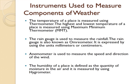The next is the rain gauge. Rain gauge is used to measure the rainfall. The rain gauge is also known as an ombrometer. It is expressed using the units millimeter or centimeters. Rain gauge, as the name tells, is basically the instrument used to measure the amount of rainfall in a region.